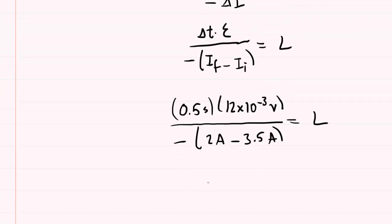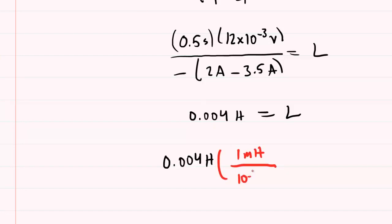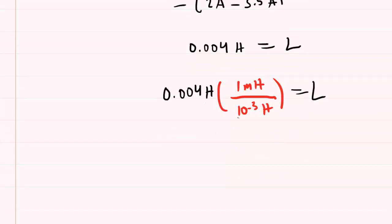We punch this into our calculators and end up with 0.004, and the standard unit of inductance is the Henry. If your homework system requires millihenries, we can do a conversion: take 0.004 Henrys and multiply by the fact that 1 millihenry is 10 to the minus 3 Henrys. The Henrys cancel out, and you're left with 4 millihenries — the correct answer to the question.